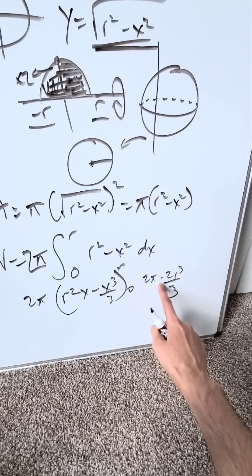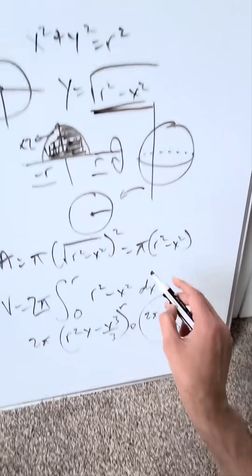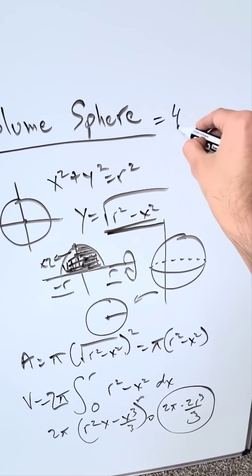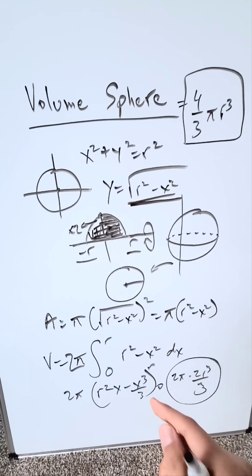When you simplify this, what will you have? Four pi over three r cubed and that right there will be your volume. Volume here is going to be four over three pi r cubed, derived using integral calculus.